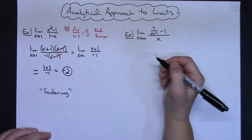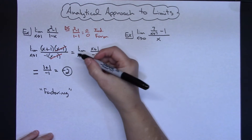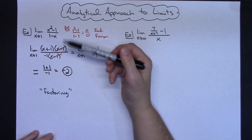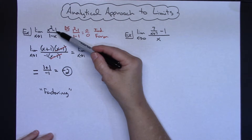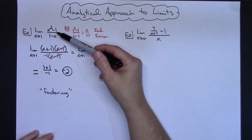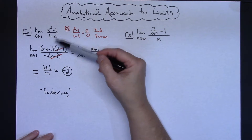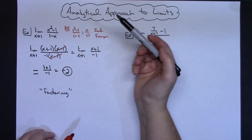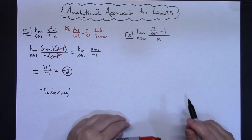Factoring is a very common method you're going to use — and it doesn't have to be the difference of two squares. It could be a trinomial, factoring by grouping, or the difference or sum of two perfect cubes. You will encounter a lot of limits where you need to factor and cancel things out to solve the limit.